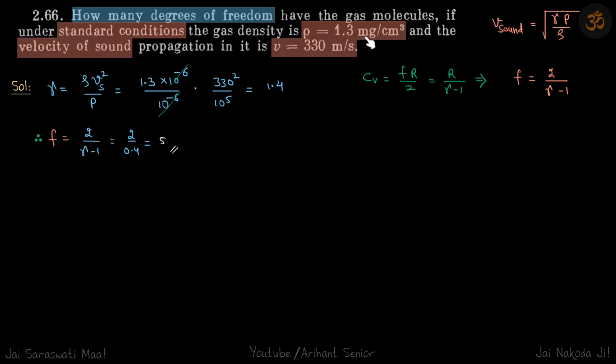Milligram becomes kilograms, that is 10 to the power minus 6, and centimeter cubed becomes meter cubed, that is 10 to the power minus 6 again, into velocity squared, that is 330 squared, by 10 to the power 5.